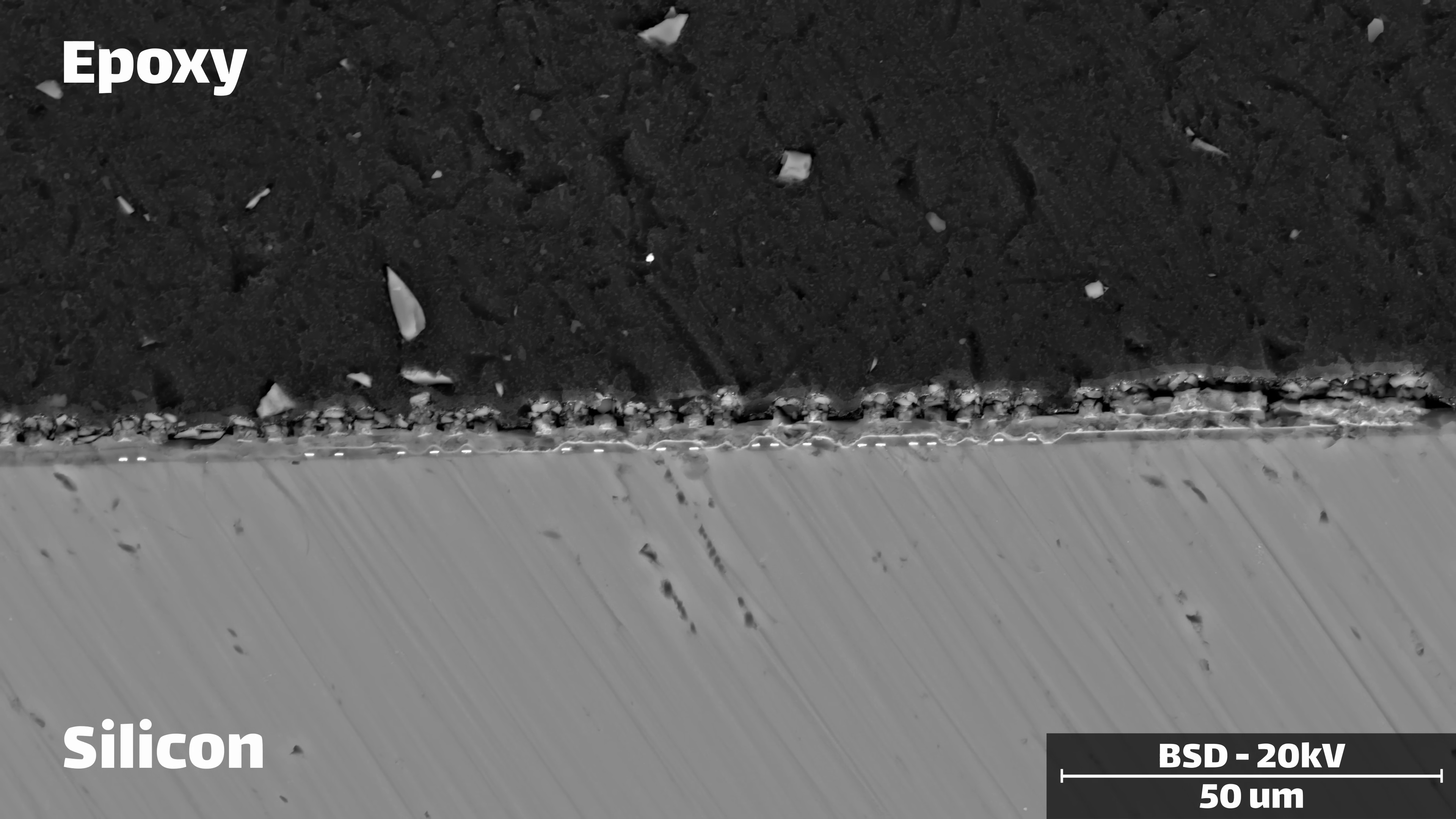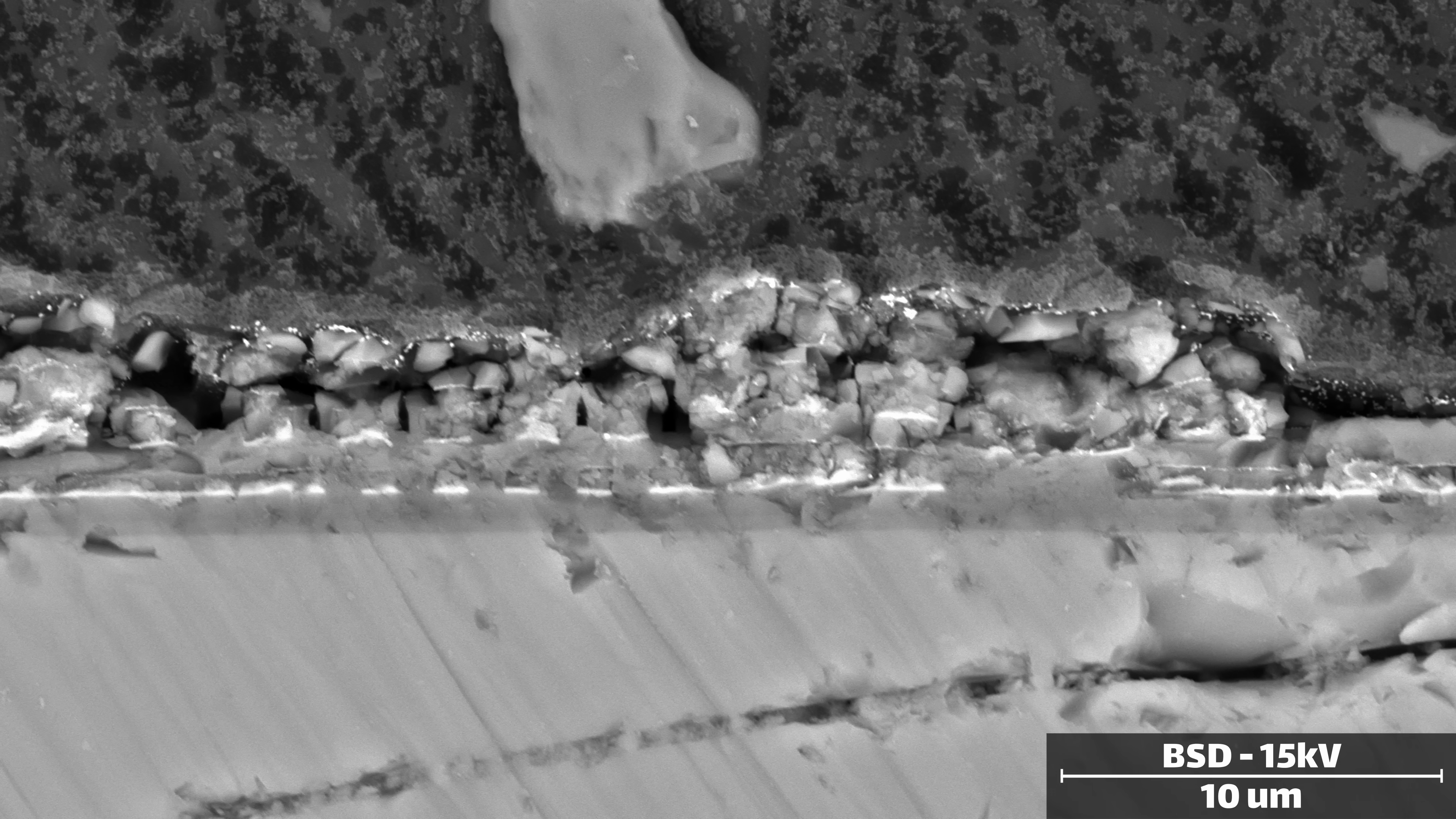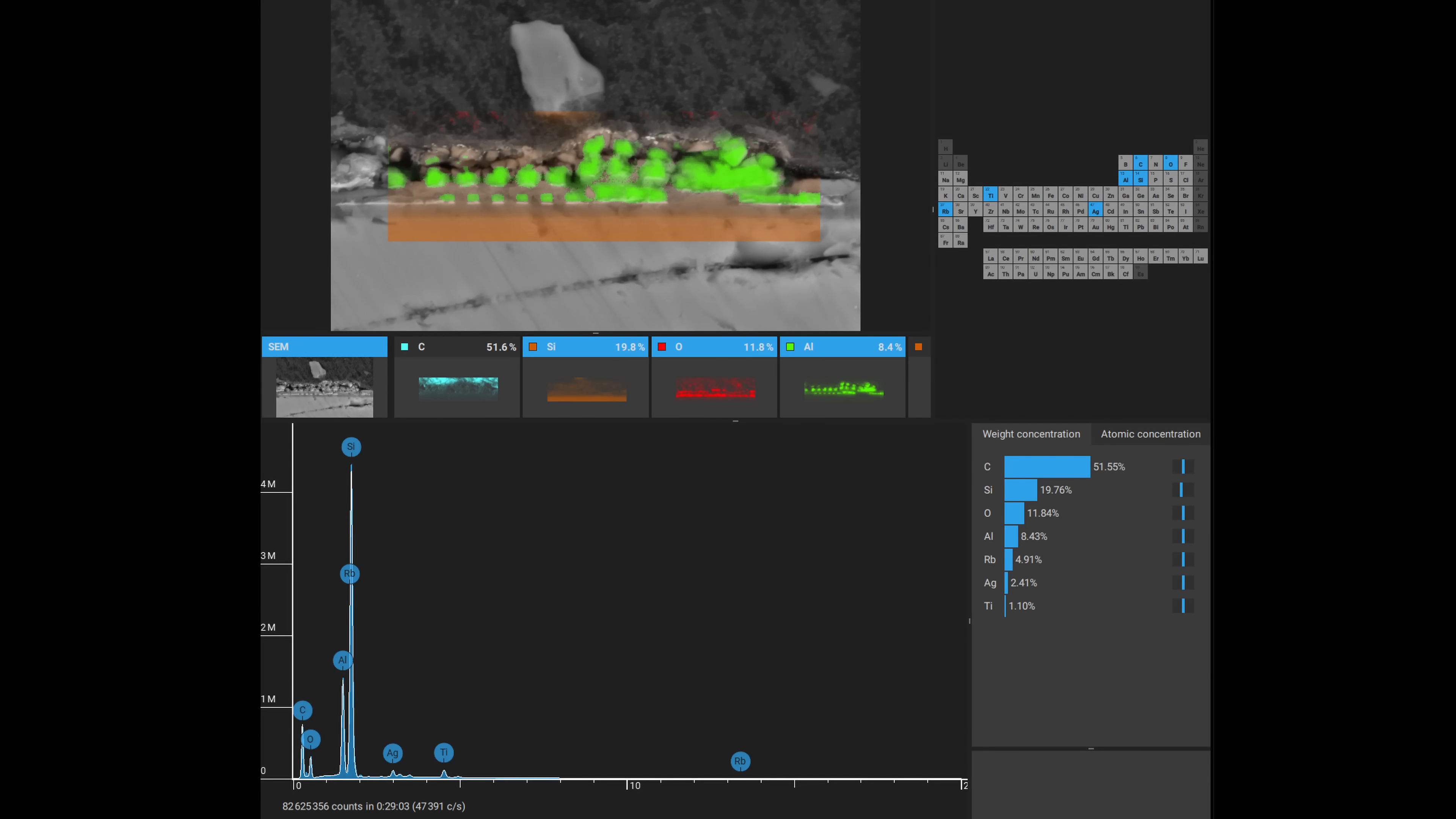Likewise, a cross-section shows some interesting details. To help understand what's going on here, we can enable a detector that identifies different atomic elements in our sample.